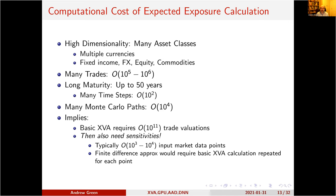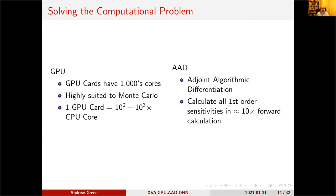Then it gets worse because you need to manage this portfolio, which means calculating sensitivities. For XVA, given its high dimensionality, you can easily have 10^3 to 10^4 input market data points. If we were to calculate finite difference approximations to all input sensitivities, we'd need to repeat the basic XVA calculation thousands to tens of thousands of times — which is clearly very expensive.